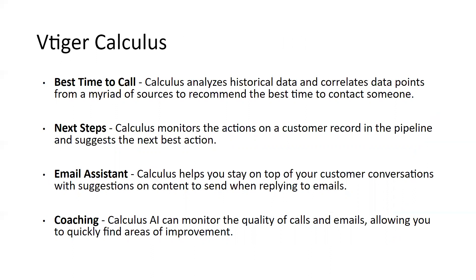Before the full feature details, I want to cover a new addition called vTiger Calculus, which plays a huge part in the sales process. We're planning a full webinar dedicated to it in the future, but I'll cover a few of the biggest features for salespeople. The first is 'best time to call' — Calculus uses AI to analyze historical data from multiple sources and recommend the best time to contact someone, whether for a cold call or to send an email most likely to get a response.